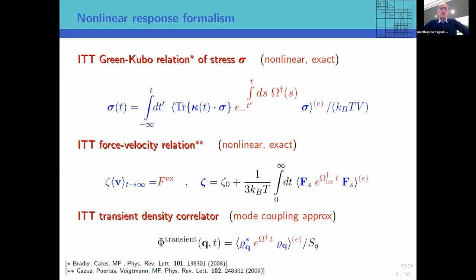In the same spirit, going back to Götze's work on mode coupling theory, the physics of the different situations enters via these transient density correlation functions, which describe how under external forcing — shearing or whatever — the structure, ρ(q) the Fourier-transformed density fluctuation, changes under external driving. Again, external driving enters via the Smoluchowski operator. This unified scheme describes non-linear rheological and mechanical properties of viscoelastic fluids, which I want to show in two test cases: macro-rheology and micro-rheology.